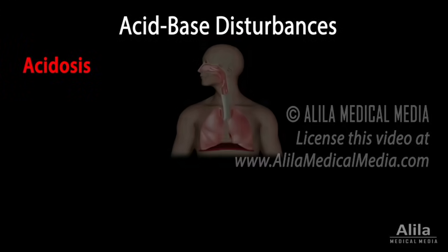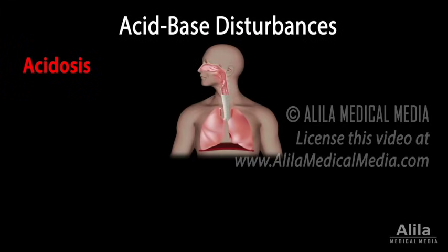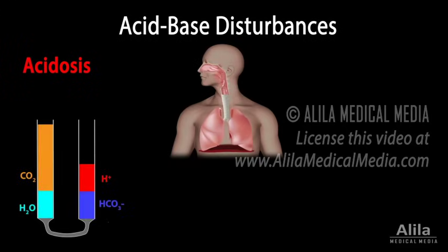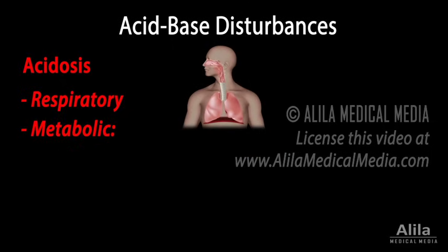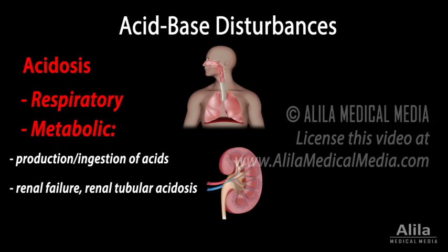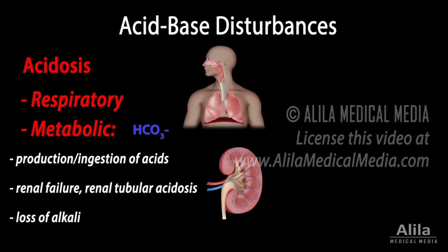Acidosis may result from inadequate function of the lungs, which causes arterial carbon dioxide to accumulate — this is respiratory acidosis. On the other hand, metabolic acidosis may result from excessive production of metabolic acids, ingestion of acids, decreased ability of the kidneys to excrete acids, or loss of alkali. Metabolic acidosis is characterized by a primary decrease in plasma bicarbonate.